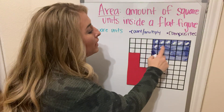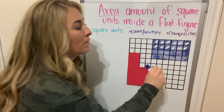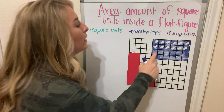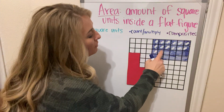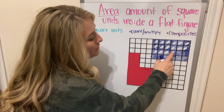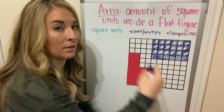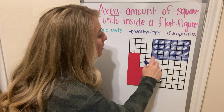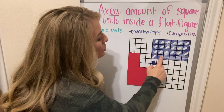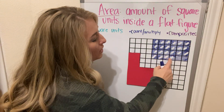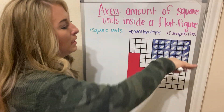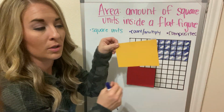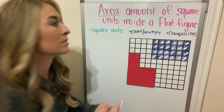7, 8, 9, 10, 11, 12 — the next row has another 6, giving me 12. 13, 14, 15, 16, 17, 18 — another 6. And then the final row: 19, 20, 21, 22, 23, 24. So in all, this figure is 24 square units.